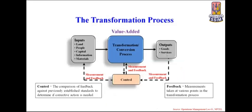Coming to the transformation process: we have input, transformation process, and output. This transformation or conversion process is very important in operations. Inputs include land, people, capital, information, and materials. Using these inputs and a transformation process, we get outputs. The output may be goods or services.